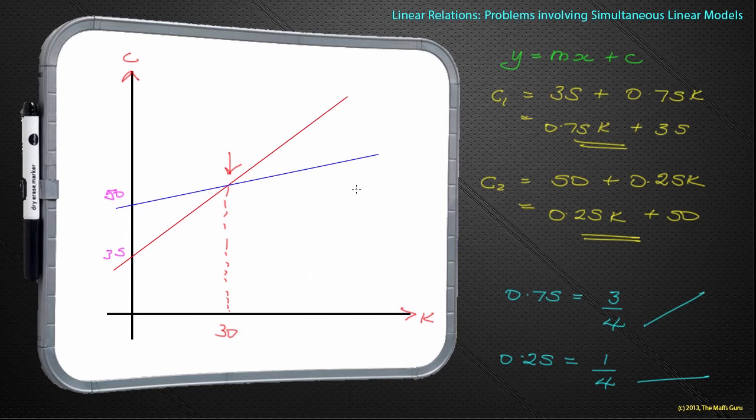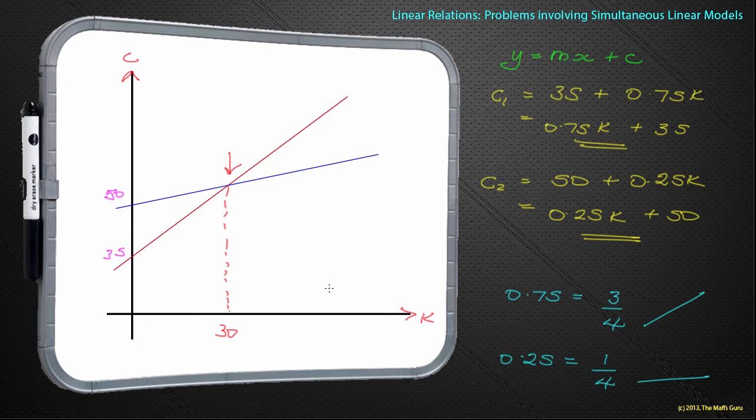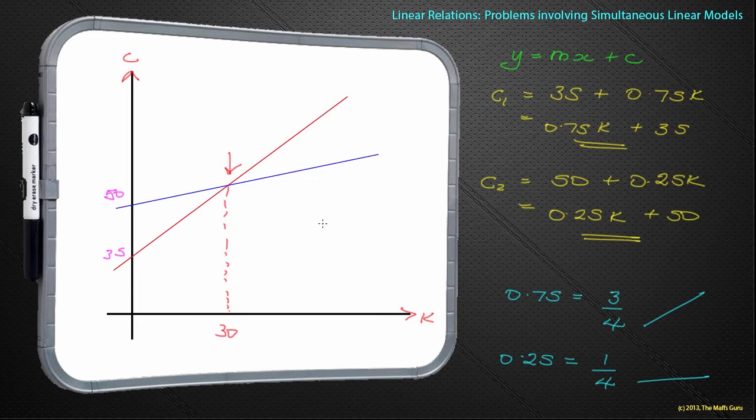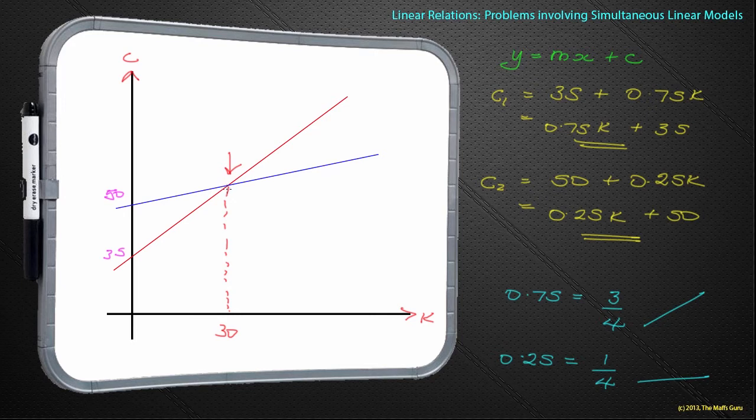As we've already found that previously. And, if we wanted to, we could go on and work out what would the cost of that be by substituting 30 into my equation. A little bit beyond the scope of this, right? But, the fact that these cross is very important because, as I say, the point where they cross, and sometimes it's easiest to find where they cross and then find other information, the point where they cross is important to us.